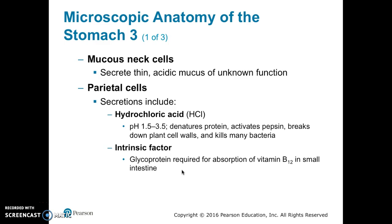Mucous neck cells secrete a thin acidic mucus of unknown function. Parietal cells secrete hydrochloric acid and intrinsic factor. Hydrochloric acid has a pH of 1.5 to 3.5 and denatures protein; it activates pepsin, breaks down plant cell walls, and can kill many bacteria. Intrinsic factor is a glycoprotein required for the absorption of vitamin B12 in the small intestine.